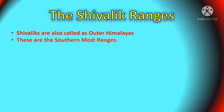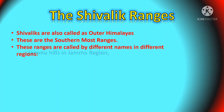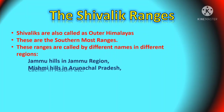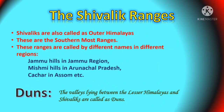Shivalik ranges are also called the Outer Himalayas. These are the southernmost ranges and are called by different names in different regions — Jammu Hills in the Jammu region, Mishmi Hills in Arunachal Pradesh, and Kachar Hills in Assam. The valleys lying between the Lesser Himalayas and the Shivaliks are called Duns, for example Kotli Dun and Potli Dun.